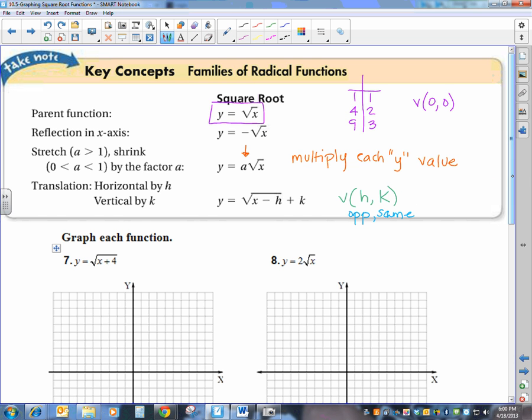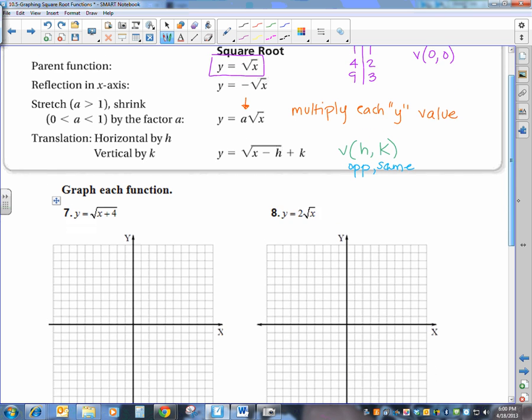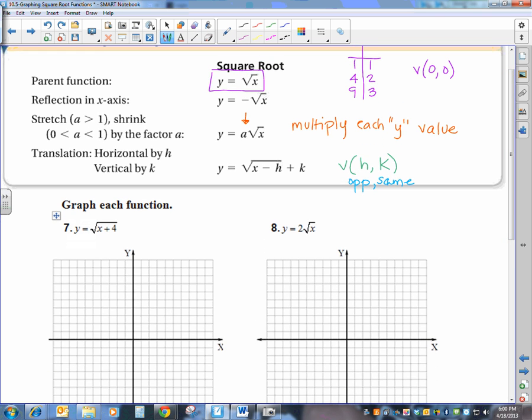Alrighty, now let's go look at our function. First and foremost, you want to identify that vertex or that starting point. So to do that, I need to know what that 4 is. Does that 4 represent an a, an h, or a k? It represents h, because it is inside, underneath the radical. And when you're underneath the radical, that's h. So my vertex, remember the h would do the opposite, so my vertex is at (-4, 0).